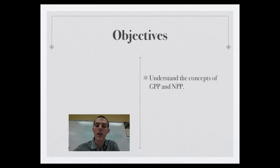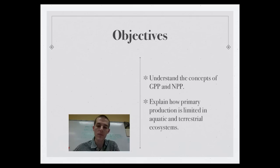The first one is to understand the concepts of GPP and NPP, gross primary productivity and net primary productivity. Second thing is to explain how primary production is limited in both aquatic and terrestrial ecosystems.